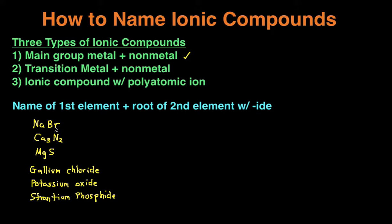First example: NaBr. We have two elements — NA as the first element, BR as the second element. For the first element, we literally just name it: the name of NA is sodium. For the second element, BR, we take the root — BR is bromine — and then add -ide to the end of it. So instead of bromine, it becomes bromide. That means NaBr's name is sodium bromide.